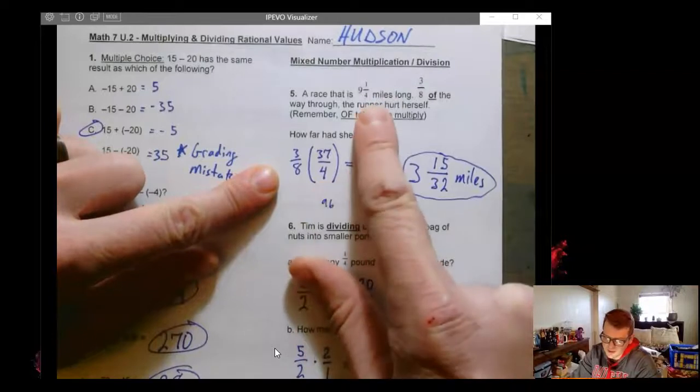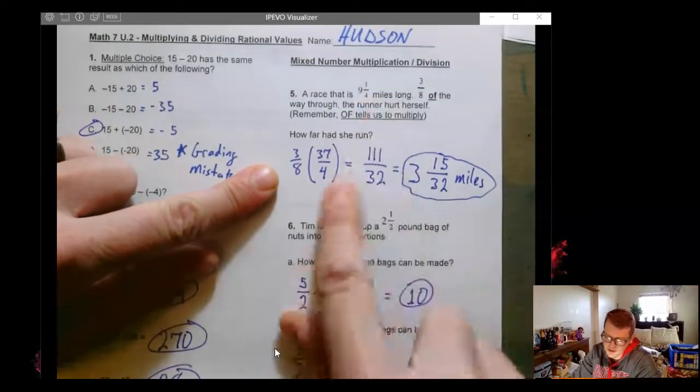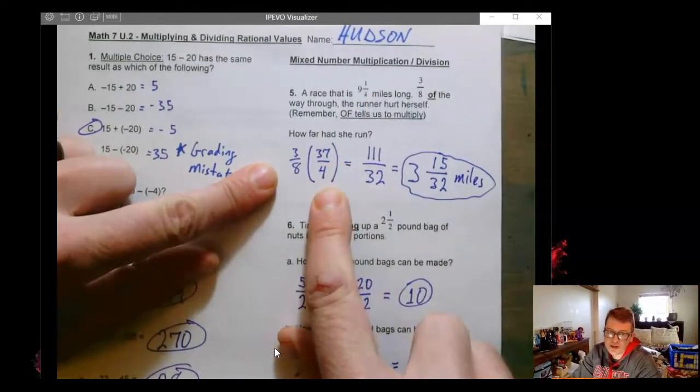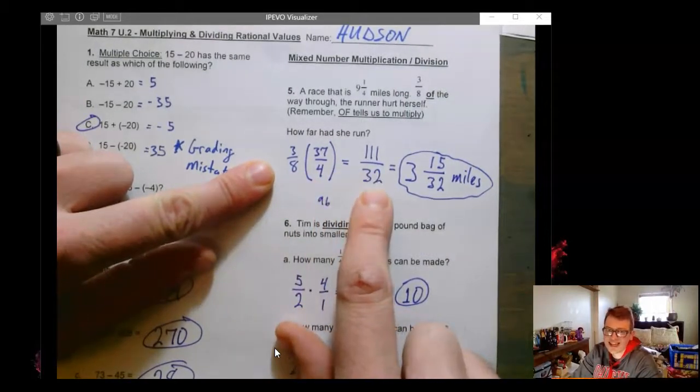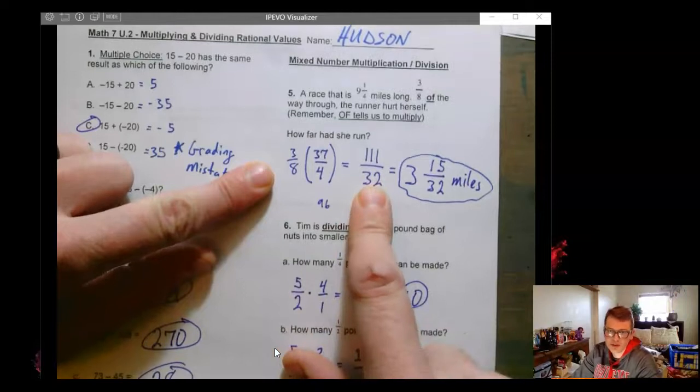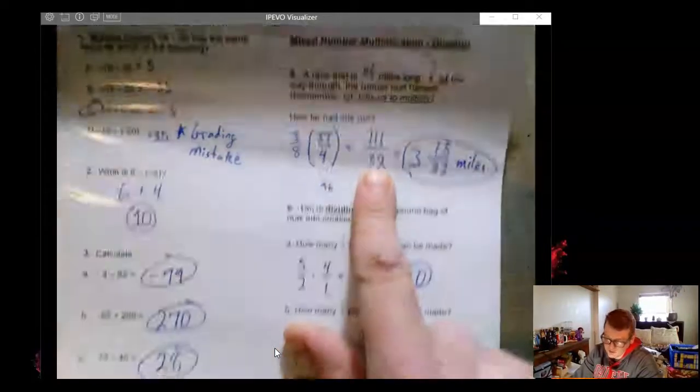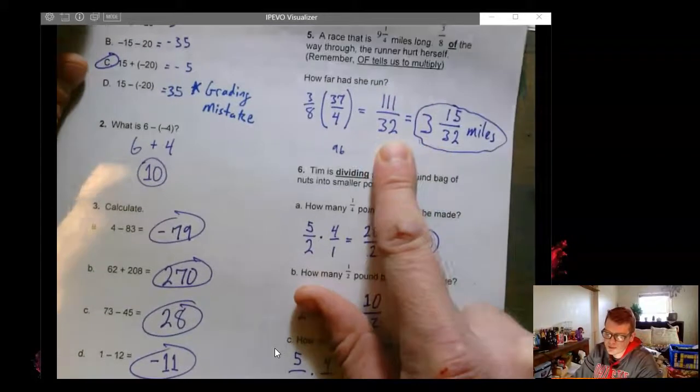So 3 eighths of tells us to multiply, and the entire race, 9 and a quarter, if I do 4 times 9 plus the 1, I get 37 fourths. So we multiply that across, we get 111 32nds. Or 111 over 32. Of course, like I said, we can use calculators.